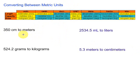So let's just take a look at this first one. 350 centimeters, we want to convert that to meters. Well, centimeters is right here, and we're going to meters. That's two jumps. One, two.